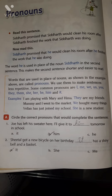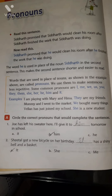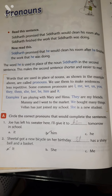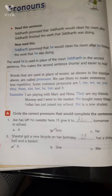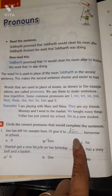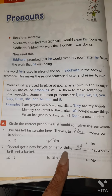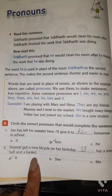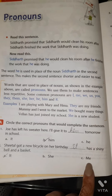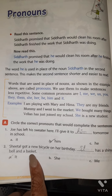The first question is to circle the correct pronoun that would complete the sentence. First: 'Joy has left his sweater here, we will give it to ___ tomorrow.' Joy is a boy, so the answer is 'him.' Second: 'Sheetal got a new bicycle on her birthday. ___ has a shiny bell and a basket.' Since we're talking about the bicycle (a thing), the answer is 'it.'